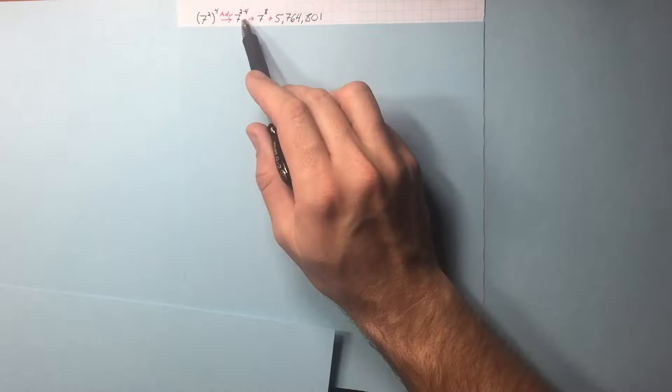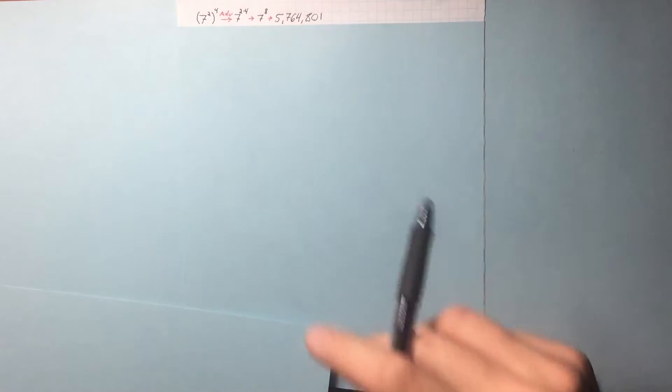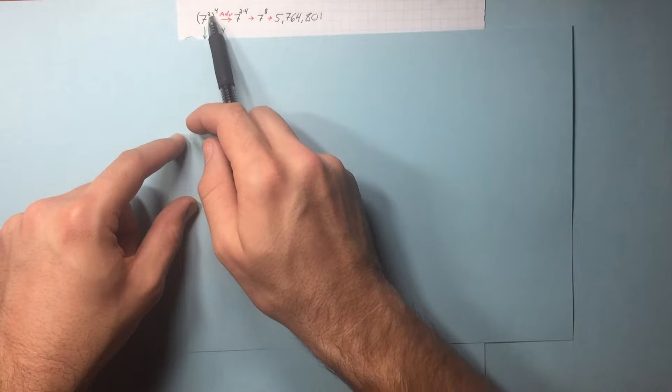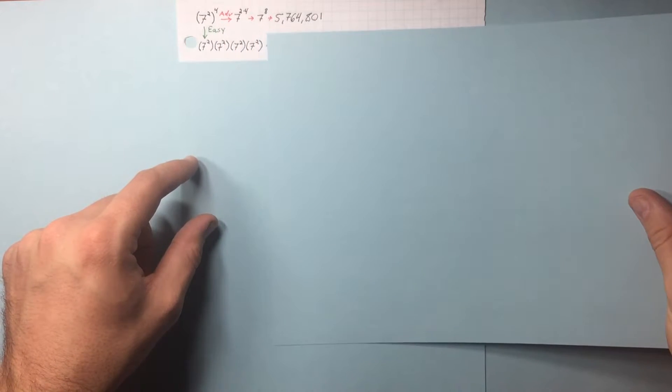So if you can't remember, you multiply the exponents together. Here's a way that you can think about it. This is 7 squared to the 4th power. That means that this thing times itself 4 times.